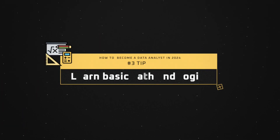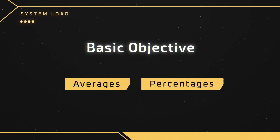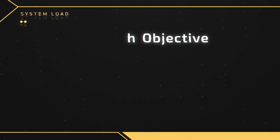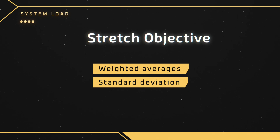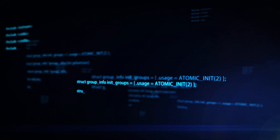Tip number three is to learn basic math and logic — things like averages and percentages. That's really all you need. Being a data analyst doesn't require a lot of math. For a stretch objective, you want to learn things like weighted averages, standard deviation, or quartiles. These are more advanced mathematical concepts, not essential, but helpful if you progress toward becoming a machine learning engineer or data scientist.